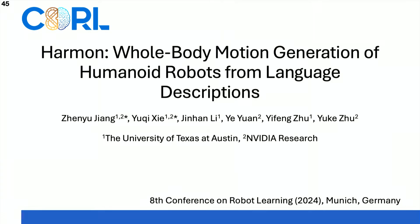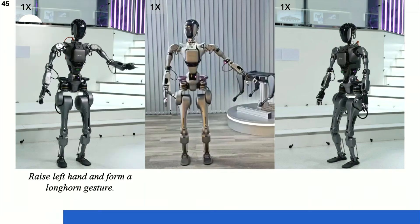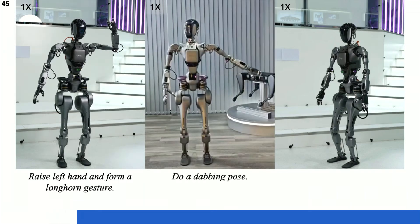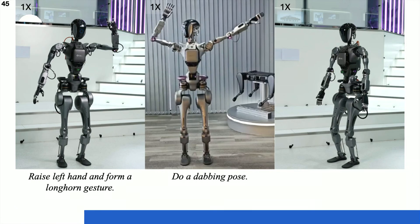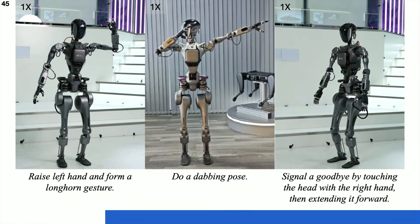Hi everyone. I'm Zheng from UT Austin, and I'm glad to present our work, Harman — how about motion generation with humanoid robots? From a free-form text description, Harman generates natural, expressive, and text-aligned humanoid motion.